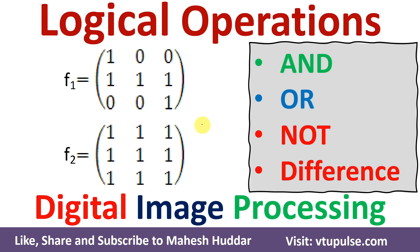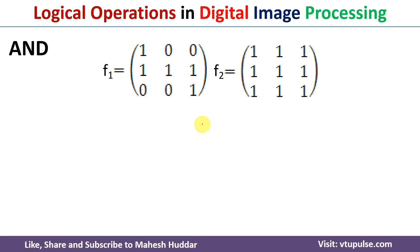Welcome back. In this video I will discuss how we can perform different logical operators like AND, OR, NOT, and DIFFERENCE on a given fragment of images in digital image processing. In this case we have been given two fragments of images denoted with F1 and F2.